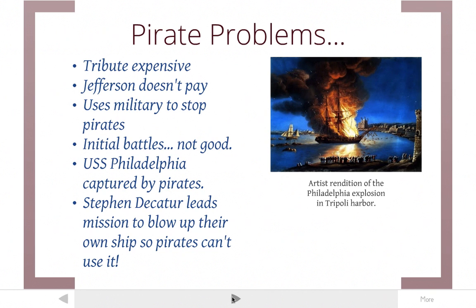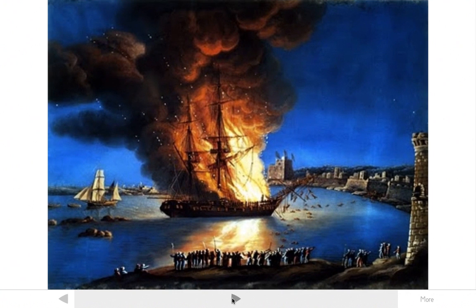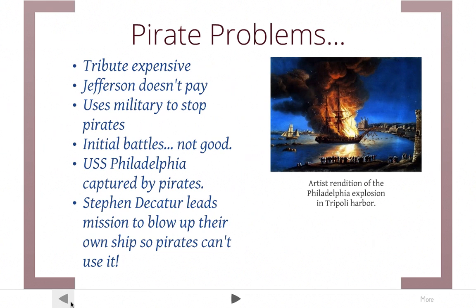There's a famous story about one of the naval battles. A ship called the USS Philadelphia is captured by the pirates — it's a very new, high-tech, big ship. The pirates were going to be able to use this ship against the United States. So rather than let the pirates have it, a lieutenant named Stephen Decatur sneaks into Tripoli Harbor at night, takes a rowboat, rows out there, puts some explosives on board, and blows the ship to smithereens so the pirates can't use it. It kind of illustrates how poorly the initial battles were going for the United States in this war with the Barbary States.